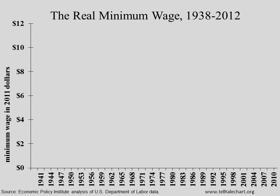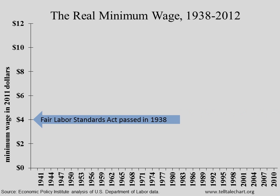This graph shows the changing value of the minimum wage. It plots that value in real dollars, adjusting for inflation, so the older values are plotted as their current — in this case 2012 — equivalents. The federal minimum was established in 1938, when the Fair Labor Standards Act set a minimum for covered workers at 25 cents an hour, about $4 in today's currency.